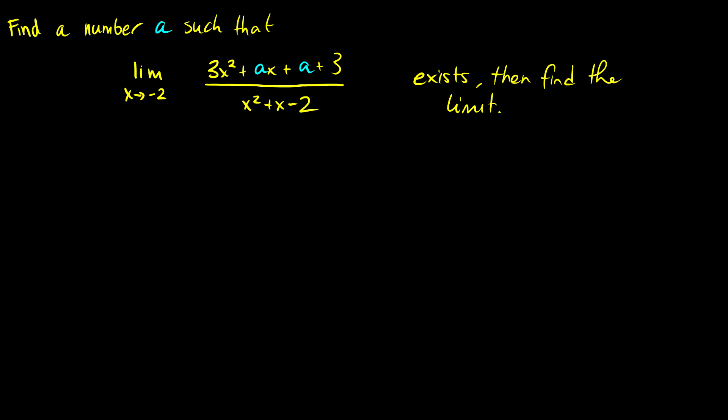In this video we're going to tackle some more difficult limit questions. In this question I'm asking you to find a number a such that the limit as x approaches negative 2 of 3x² + ax + a + 3 all over x² + x - 2 exists, and then I want you to find the limit.